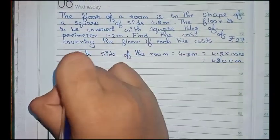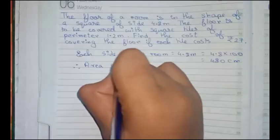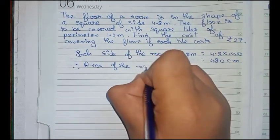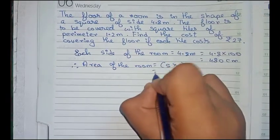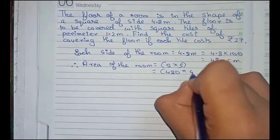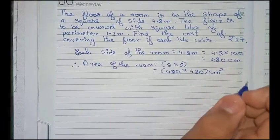Therefore, finding the area of the room: area equals side into side, equals 480 into 480 centimeter square.